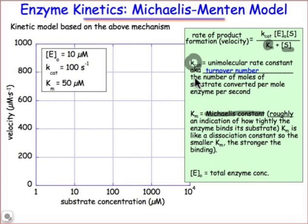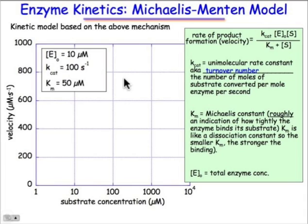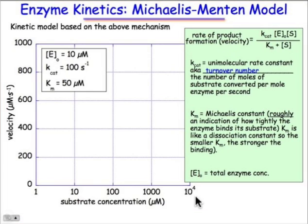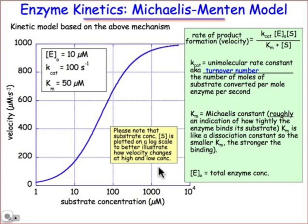Kcat also goes by another name: it represents the turnover number, which is the frequency at which product is produced — moles of substrate converted per mole of enzyme per second. If you plot this curve on a plot of substrate concentration on a logarithmic x-axis, where each increment is a power of 10, the Michaelis expression shows sigmoidal behavior. It turns over at the top and plateaus out — that's the point where the enzyme is fully consumed with substrate, the saturation point. That plateau represents Vmax.